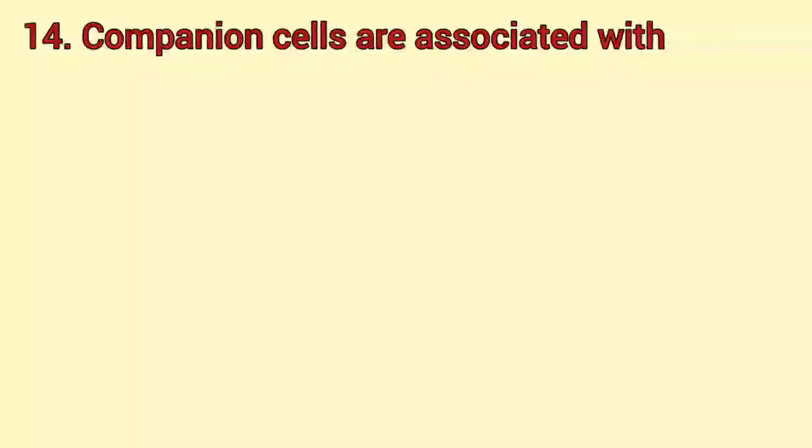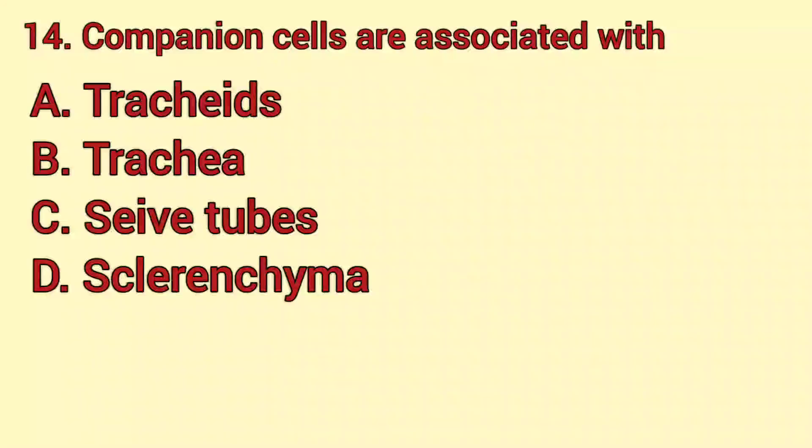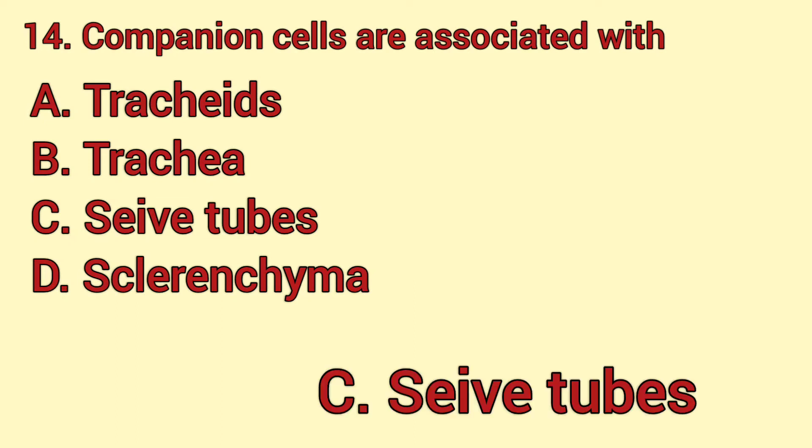Companion cells are associated with tracheids, trachea, sieve tubes, or sclerenchyma? The answer is C — sieve tubes.